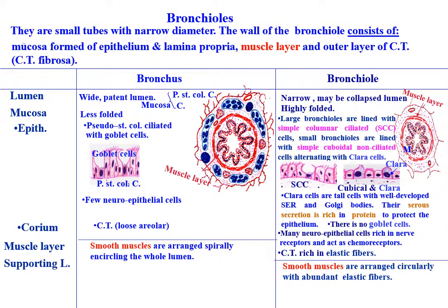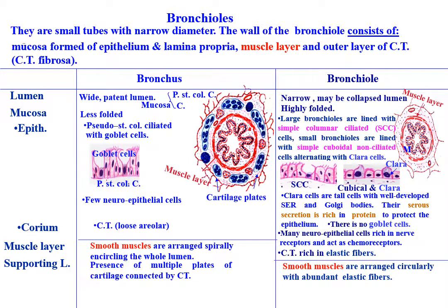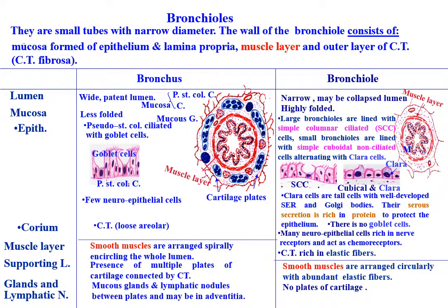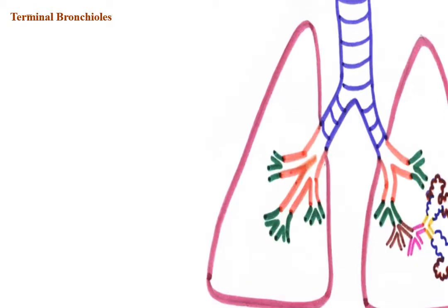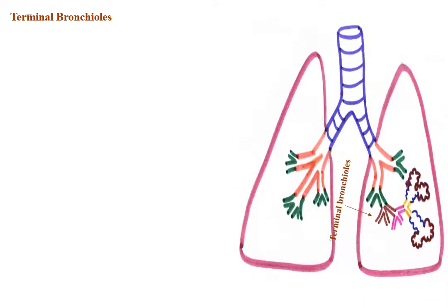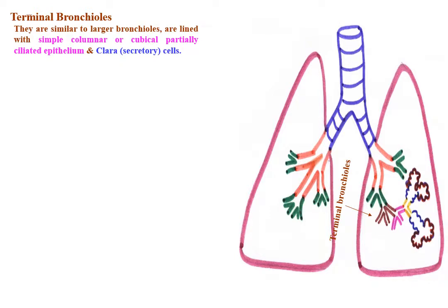The supporting layer has multiple plates of cartilage connected by connective tissue in the bronchus, but no cartilage is present in the wall of bronchioles. Glands and lymphatic nodules are present in the wall of the bronchus, but there are no such glands or lymphatic nodules in the bronchiole. Terminal bronchioles are similar to larger bronchioles; however, they are lined with simple columnar or cuboidal, partially ciliated epithelium and Clara cells.